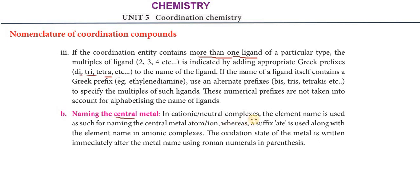For naming the central metal atom: in cationic and neutral complexes, the element name is used as such for naming the central metal atom. However, in anionic complexes, the suffix '-ate' is added to the elemental name of the central metal atom. So for anionic complexes, the central metal atom name receives the '-ate' suffix.